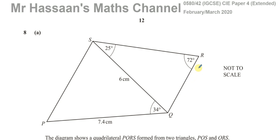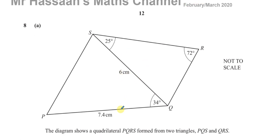Welcome back. This is Mr. Hassan's Maths Channel and I'm now going to answer question number 8A from the February-March 2020 International GCSE, IGCSE, Cambridge paper 40580, syllabus paper 4, variant 2. This question is about the quadrilateral PQRS formed from two triangles.